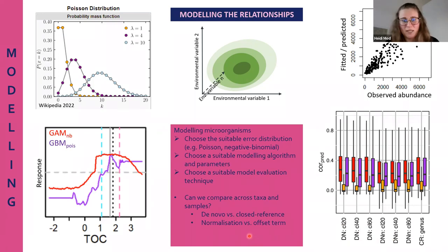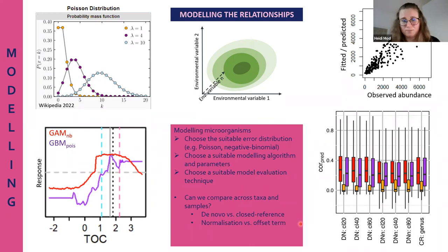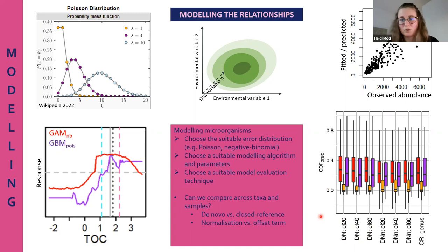Another thing more related to modeling is normalization - the typical step when preparing data to account for variance among samples in OTU counts. We tested including an offset term in the models, and we found that using the offset term slightly outperforms using normalization in the data preparation step. So this is something that can be accounted for in the modeling step.